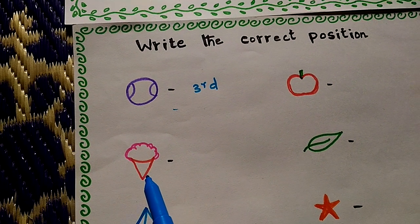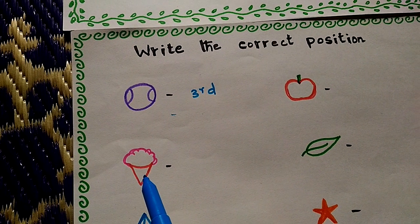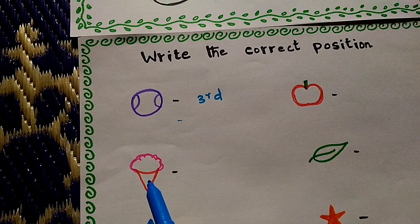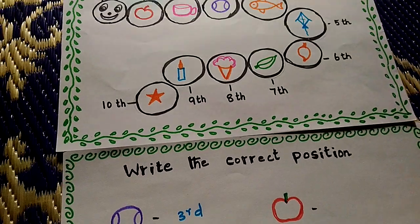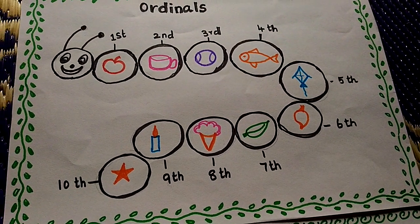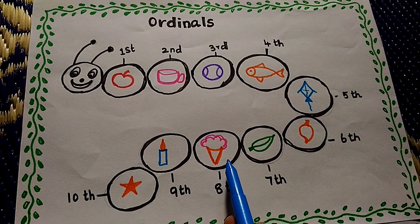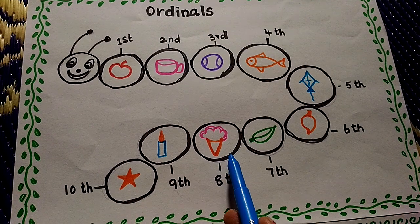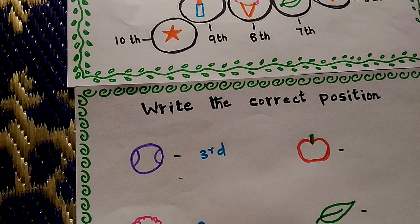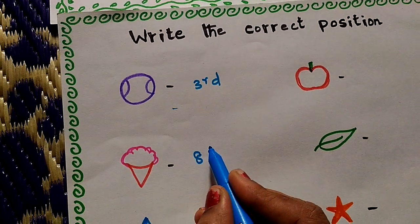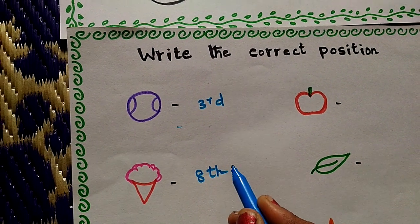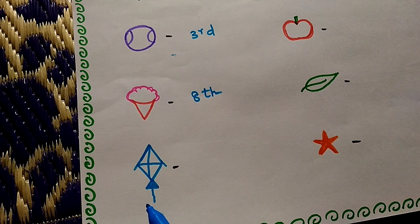Ice cream. What is this? Ice cream. Which position can we find the ice cream? Where is ice cream? See here. Eighth. Eighth position.